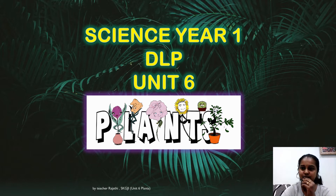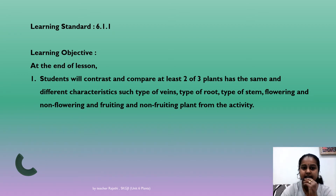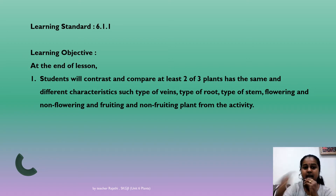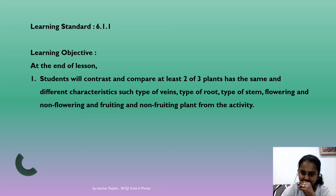At the end of the lesson, you should be able to contrast and compare at least two or three plants — their same and different characteristics — such as type of leaf veins, type of roots, type of stem, flowering and non-flowering, and fruiting and non-fruiting plants from the activity.